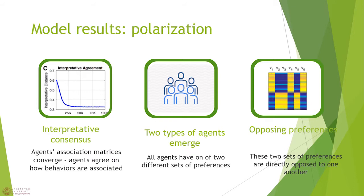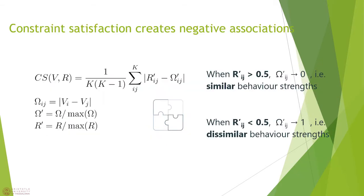In the end, we see that all agents agree on how behaviors are associated, but we also have polarization. Two types of agents emerge, one with a certain set of beliefs and another with directly opposed beliefs. We didn't understand why associative diffusion always leads to polarization, specifically into two groups. So we went into the details of the constraint implementation and we find a threshold of 50%. If two behaviors are associated more than 50%, the constraint pushes these to become maximally similar. If less than 50%, the constraint makes these behaviors become completely dissimilar.